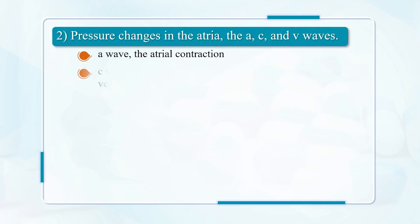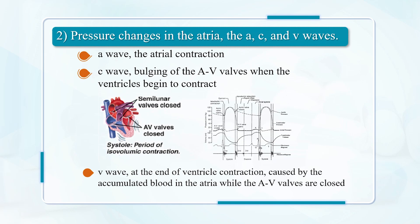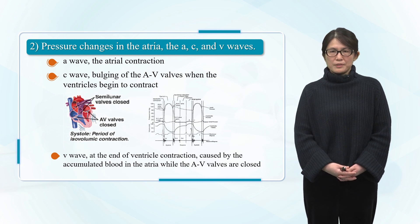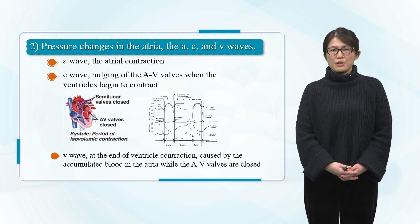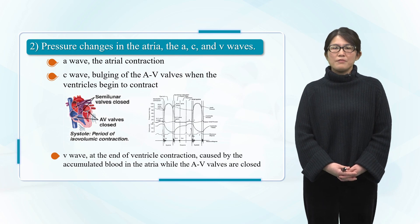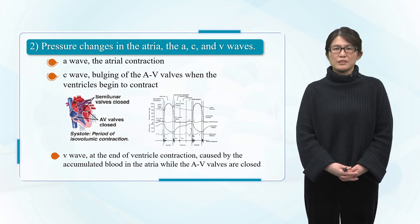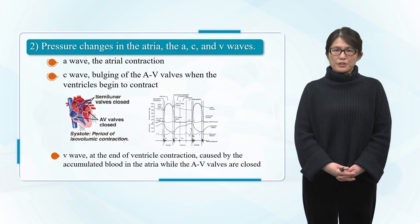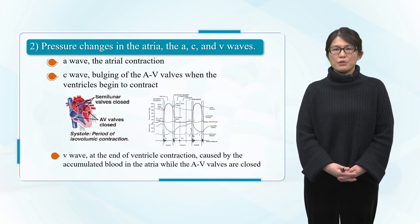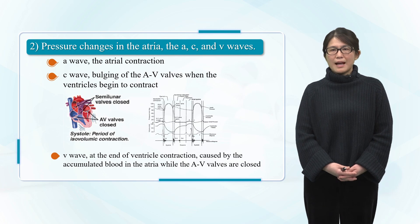As shown in the figure, the pressure changes in the diastolic period of the cardiac cycle include pressure changes in the atrium: the A, C, and V waves. The A wave corresponds to atrial contraction; the C wave corresponds to bulging of the AV valves when the ventricle begins to contract; and the V wave occurs at the end of ventricular contraction, caused by accumulated blood in the atrium while the AV valves are closed.